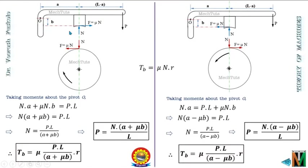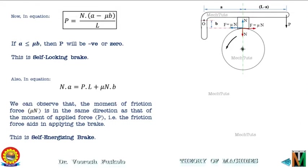The second configuration was when the fulcrum point is above the line of action of the friction force by a distance b. We discussed two cases — clockwise rotation and anticlockwise rotation — and obtained those equations. In this case we also learned about the self-locking brake and self-energizing brake.